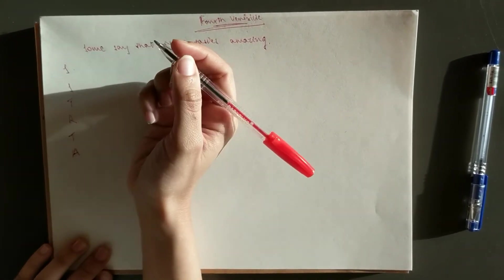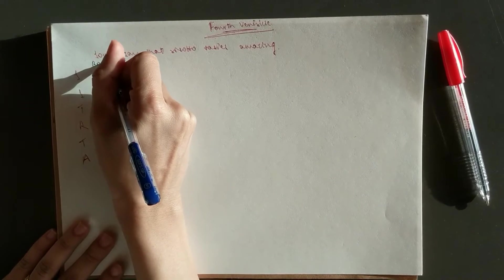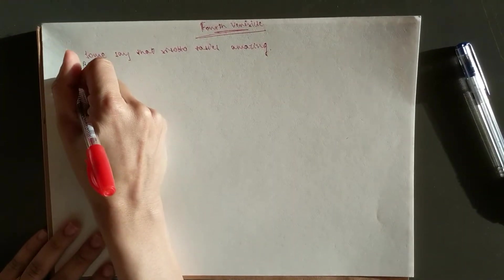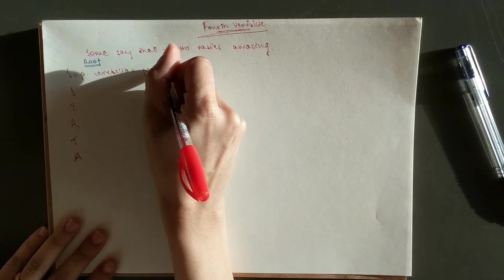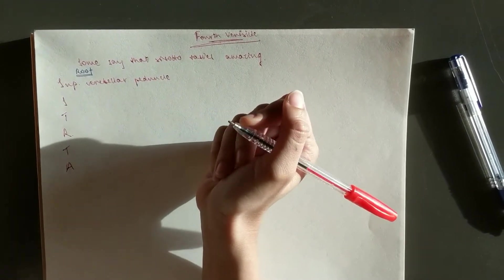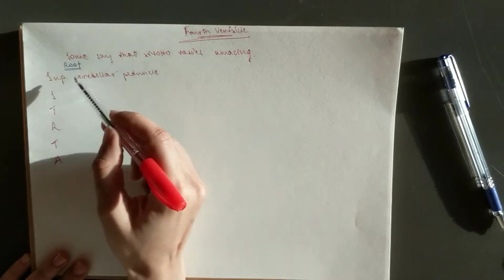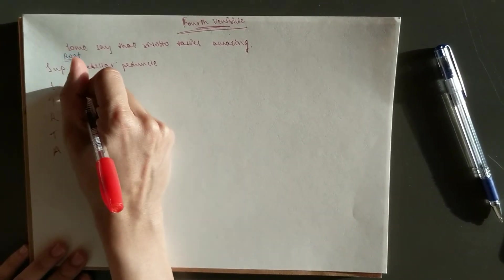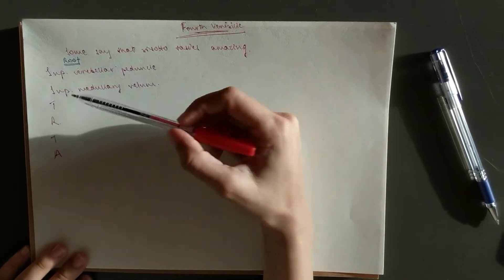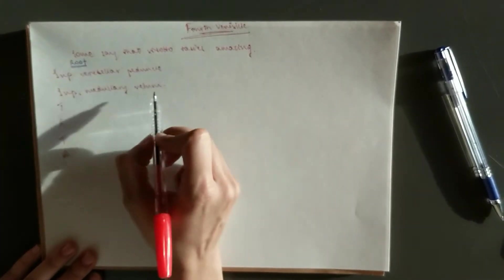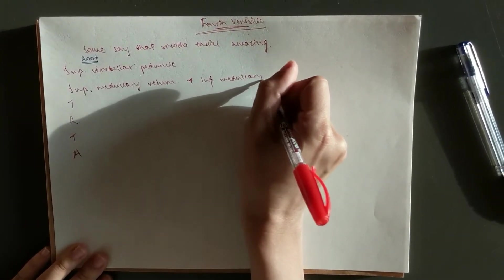We're going to start with the roof. So S is the superior cerebellar peduncle. And when we have the cerebellar peduncle superior, then we also have the inferior one. But that doesn't come under the roof. Then we move on to the superior medullary vellum. And when I write superior again, we know that there is an inferior and that comes under the roof. So you have the inferior medullary vellum.